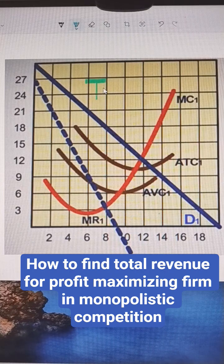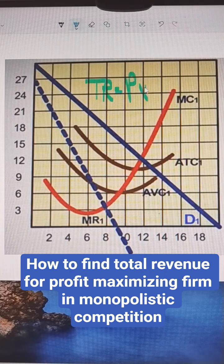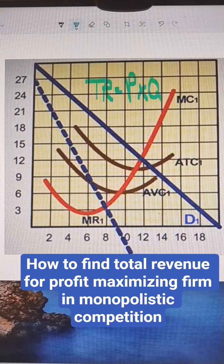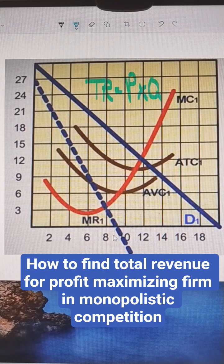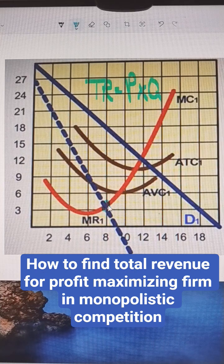Total revenue is price times quantity. So we need to figure out what the profit maximizing quantity is first. That's where MR equals MC.